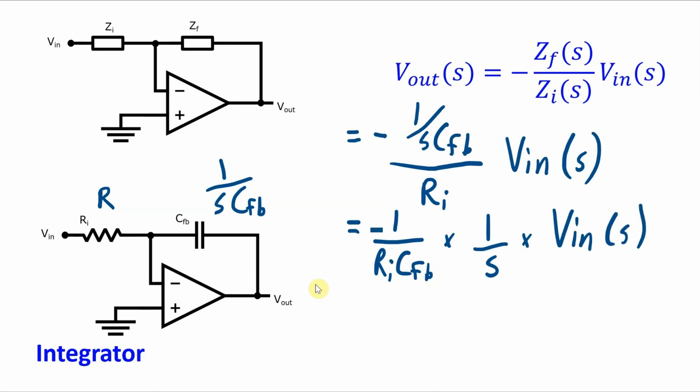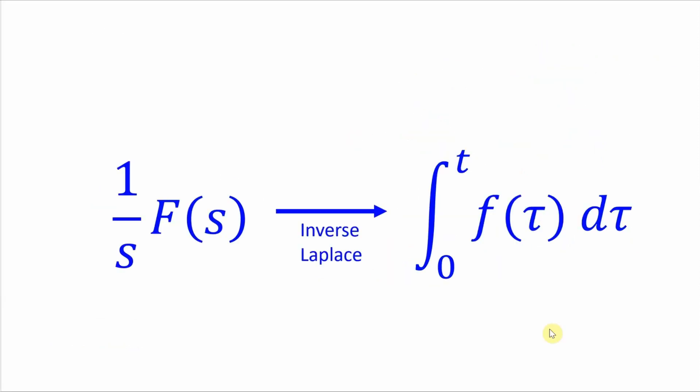Now again I'm going to have to apply an inverse Laplace transformation but also again this is a very easy one. The transform that we will use this time says that the inverse transform of 1 over s times some function in the s domain is equal to the integral over time of the function in the time domain. And another way to look at it is that this 1 over s parameter indicates an integral in the time domain.